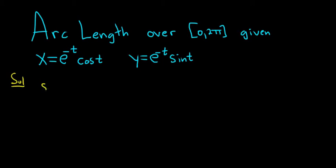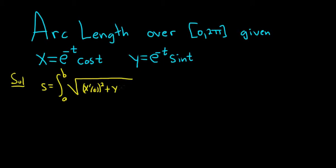So the formula for the arc length, which we can call S from A to B, whenever it's parametrized by parametric equations, the formula is given by the integral of the square root of x prime of t quantity squared plus y prime of t quantity squared dt. So given parametric equations x and y, the arc length from A to B is the length of the arc of the graph given by this formula.